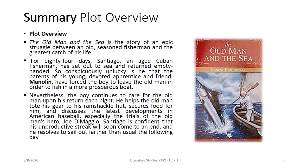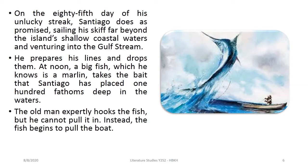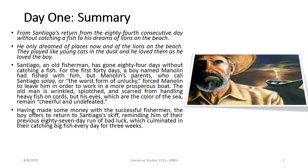The old man showed Manolin that he was confident that his unproductive streak would soon come to an end. He resolved to sail out farther than usual the following day. On the eighty-fifth day of his unlucky streak, Santiago set out, sailing his skiff far beyond the island's shallow waters and venturing into the Gulf Stream. He prepared his lines, dropped them, and at noon a big fish — known as a marlin — took the bait. Santiago had the fish hooked but could not pull it up; instead the fish began to pull the boat.